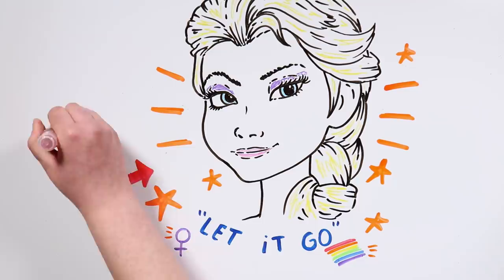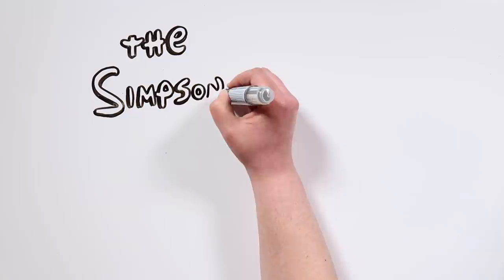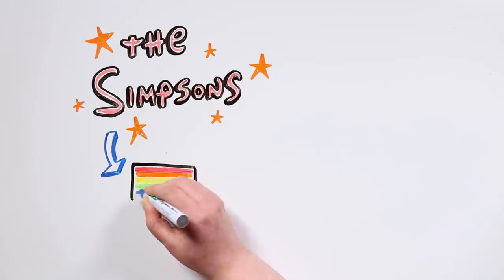There are other examples beyond Disney productions, of course. The Simpsons, one of the world's most famous shows, has also made references to LGBTQ plus community. In fact, the first kiss between two men in the entire history of American television took place in a Simpsons episode.